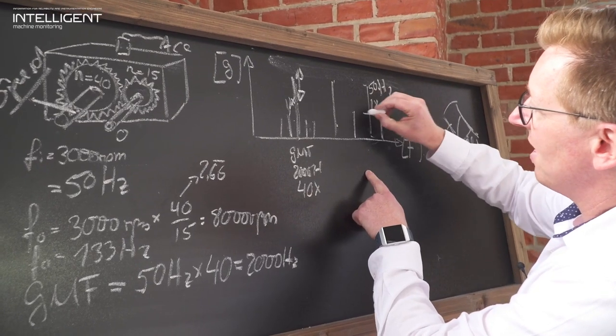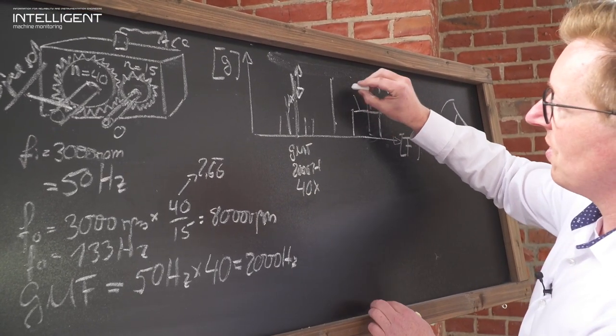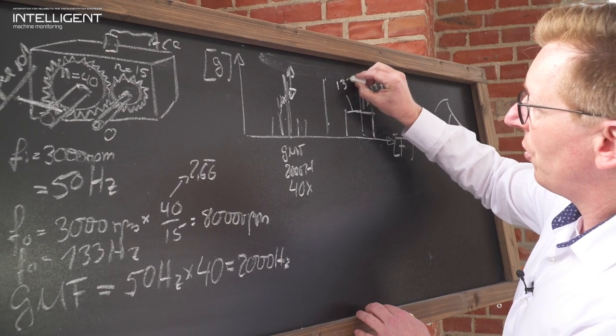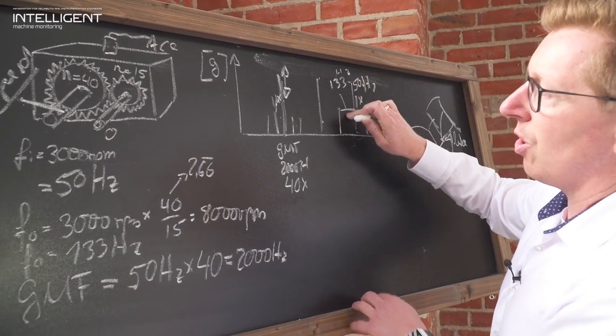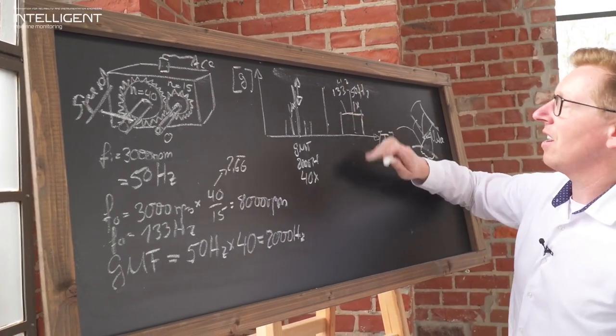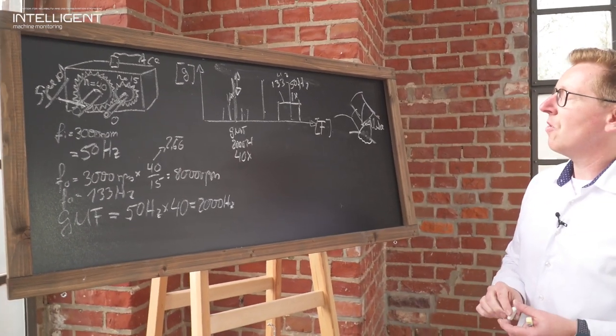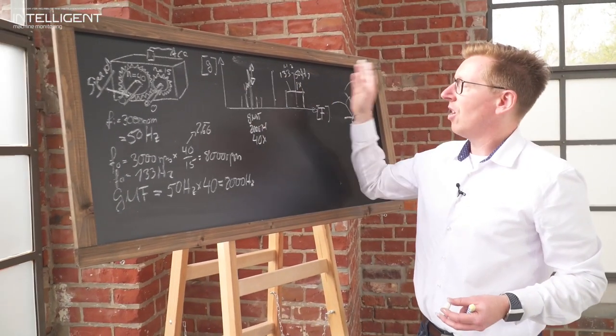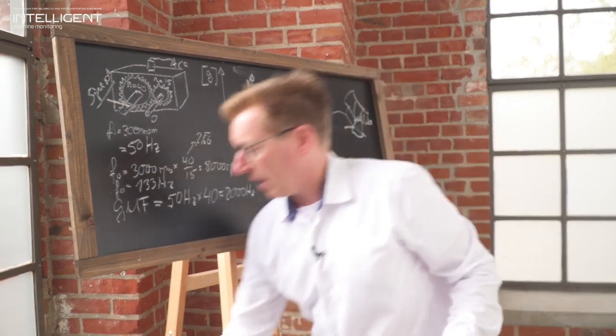or if the 1x is spaced at the larger frequency, say 133 Hertz, then it belongs to the pinion gear and would relate to a failure of the pinion gear from a spectrum perspective.